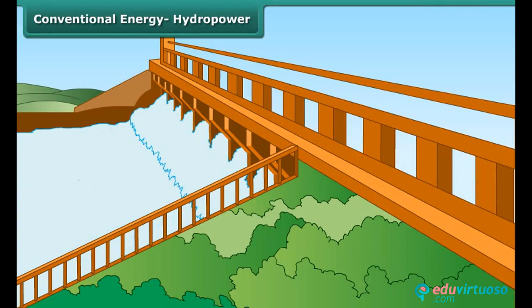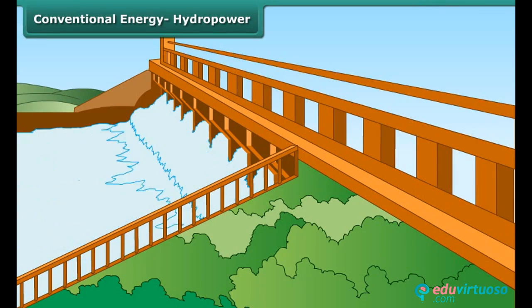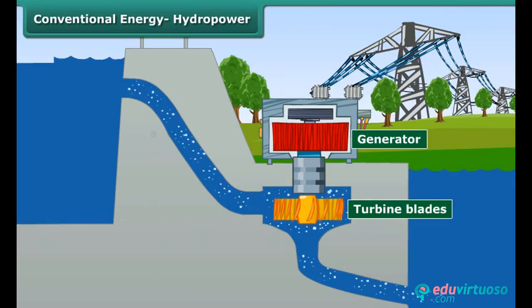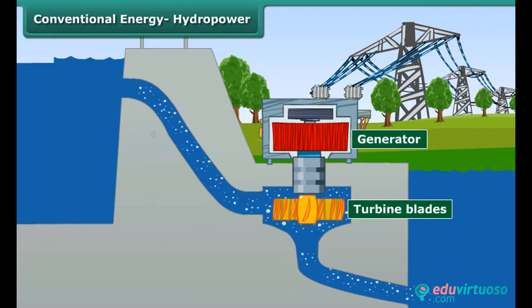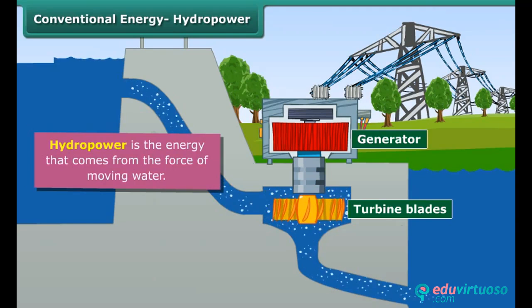Water is another very important energy resource. It helps in generating electricity. Rainwater or river water stored in dams is made to fall from heights, which moves the turbine blades. The moving blades then turn the generator to produce hydropower.